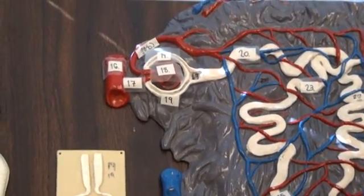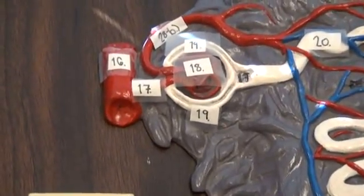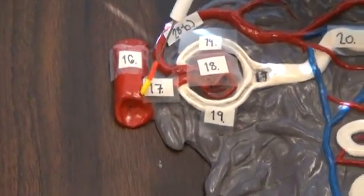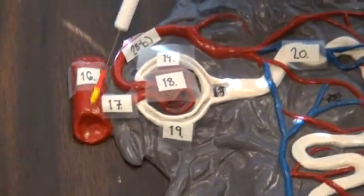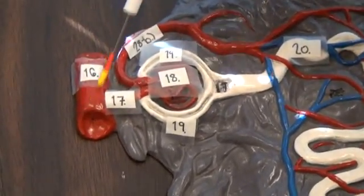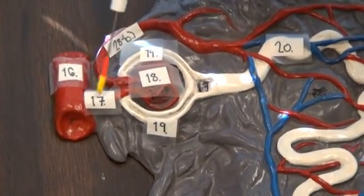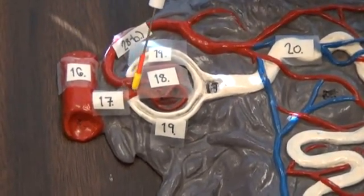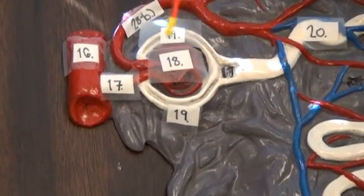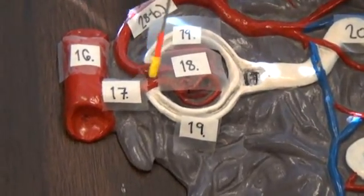We'll start with number 16, which is here. This is the interlobular artery. It's the red blood vessel. Coming from this is number 17, the smaller red blood vessel, the afferent arterial, number 17.